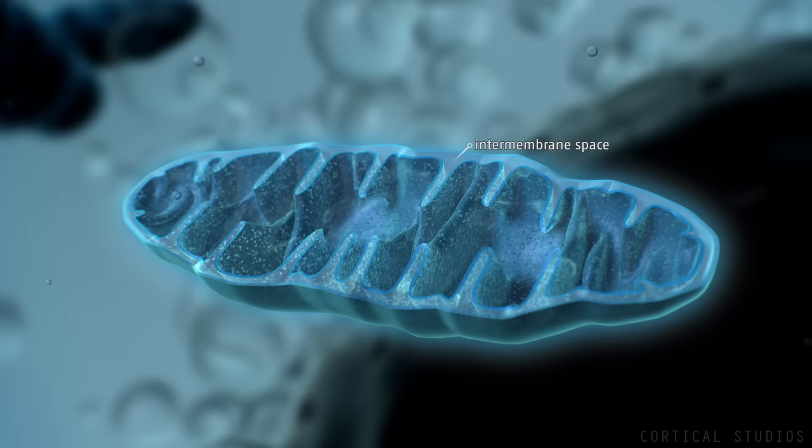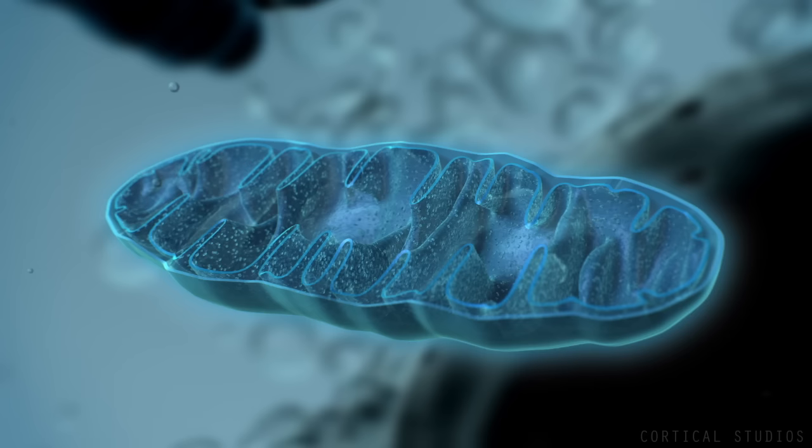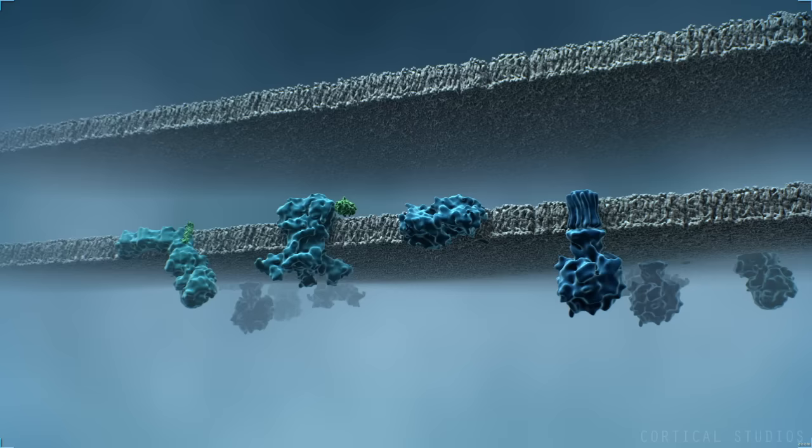ATP is generated at the inner membrane of mitochondria by an efficient mechanism called oxidative phosphorylation, involving several membrane protein complexes.